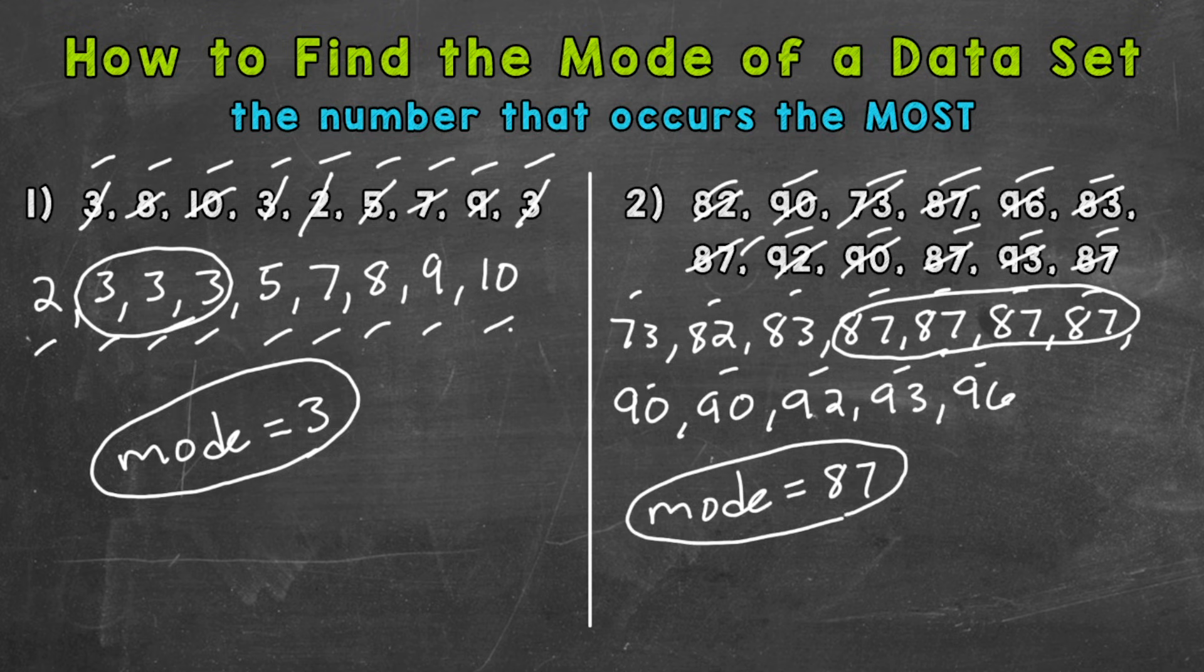Now for numbers one and two, we had one mode. It's also possible that all numbers just occur once, so you might not have a mode. And it's also possible to have multiple modes. For example, in number two, maybe we had four 96s as well, so the mode would equal 87 and 96. There are different situations as far as mode goes.